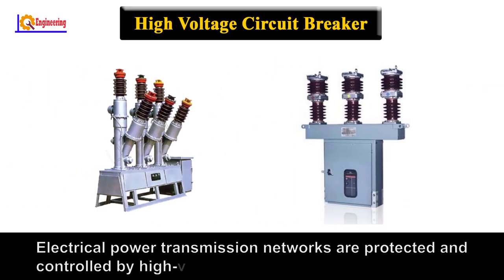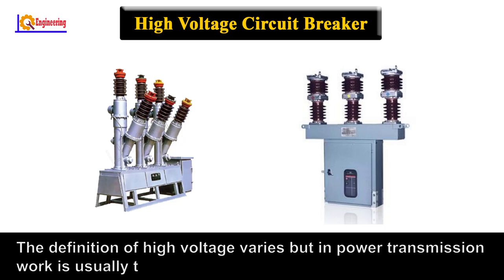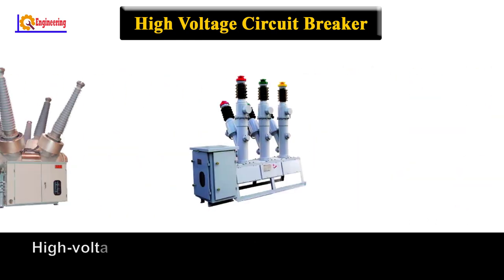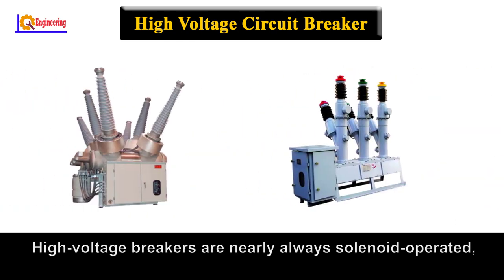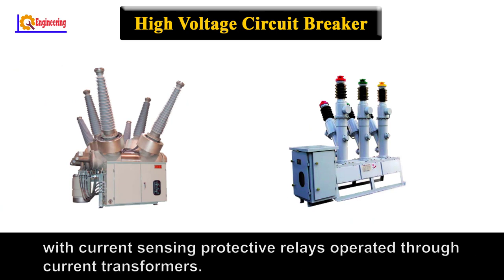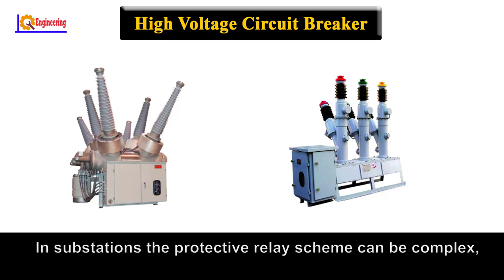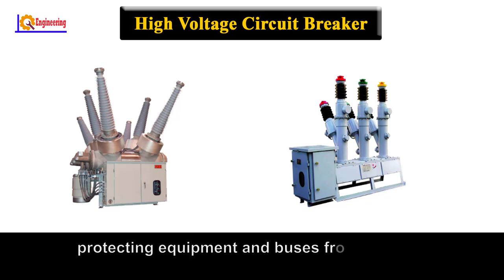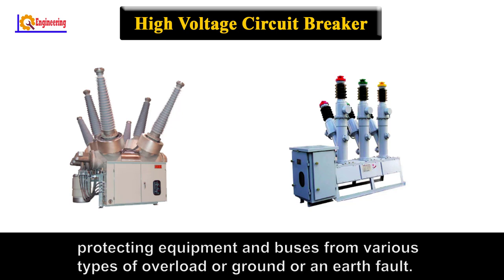High voltage circuit breaker. Electrical power transmission networks are protected and controlled by high voltage breakers. The definition of high voltage varies, but in power transmission work is usually thought to be 72.5 kV or higher. High voltage breakers are nearly always solenoid operated, with current sensing protective relays operated through current transformers. In a substation, the protective relay scheme can be complex, protecting equipment and buses from various types of overload, ground fault, or earth fault.